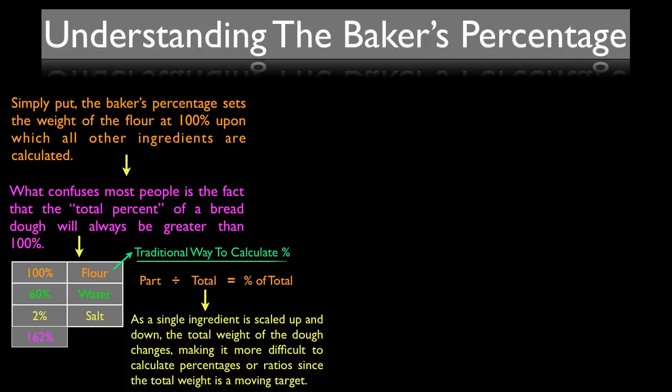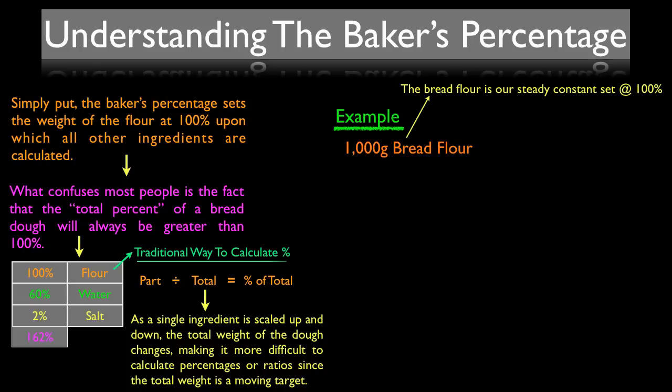Instead, we use the baker's percentage. In this example we start with a nice round number, and you always start with your flour when calculating bread recipes because flour is always set at 100%. We'll start with 1,000 grams of bread flour. The bread flour is our steady constant set at 100%, upon which all other ingredients are calculated.